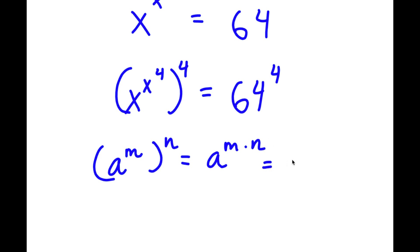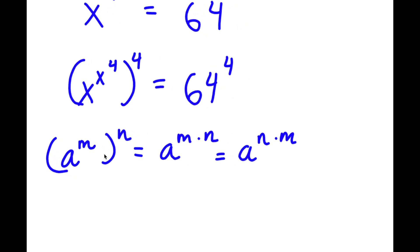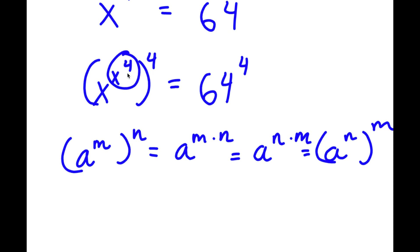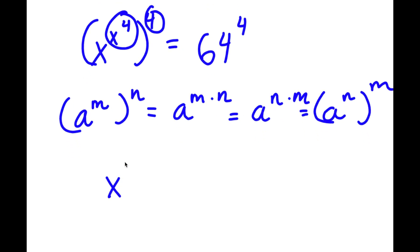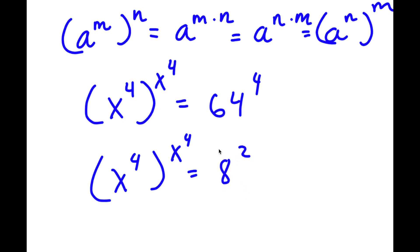If I have a to the power of m to the power of n, this is the same thing as a to the power of m times n, and m and n can be swapped. So we have x to the power of x to the power of 4, all to the power of 4, and we can think of x to the power of 4 as m and 4 as n. Switching these gives x to the power of 4 to the power of x to the power of 4, equal to 64 to the power of 4. Now 64 is the same thing as 8 squared, so I have x to the power of 4 to the power of x to the power of 4 equal to 8 to the power of 2 to the power of 4.